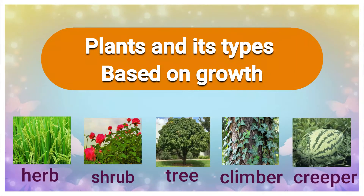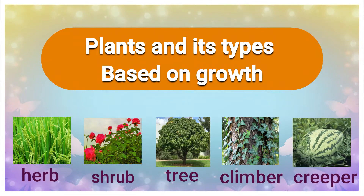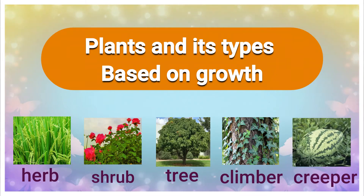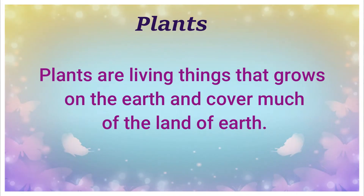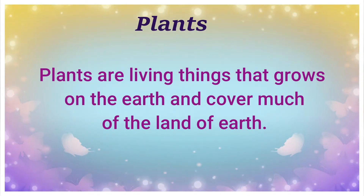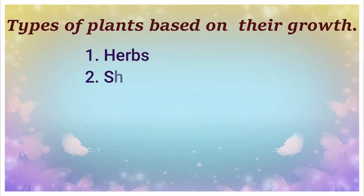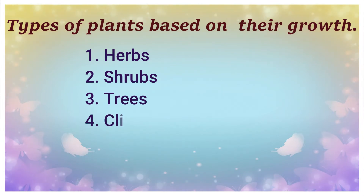Hello children, welcome! In this video we are going to learn about plants and their types. Plants are living things that grow on the earth and cover much of the land. The types of plants based on their growth habits are herbs, shrubs, trees, climbers, and creepers.